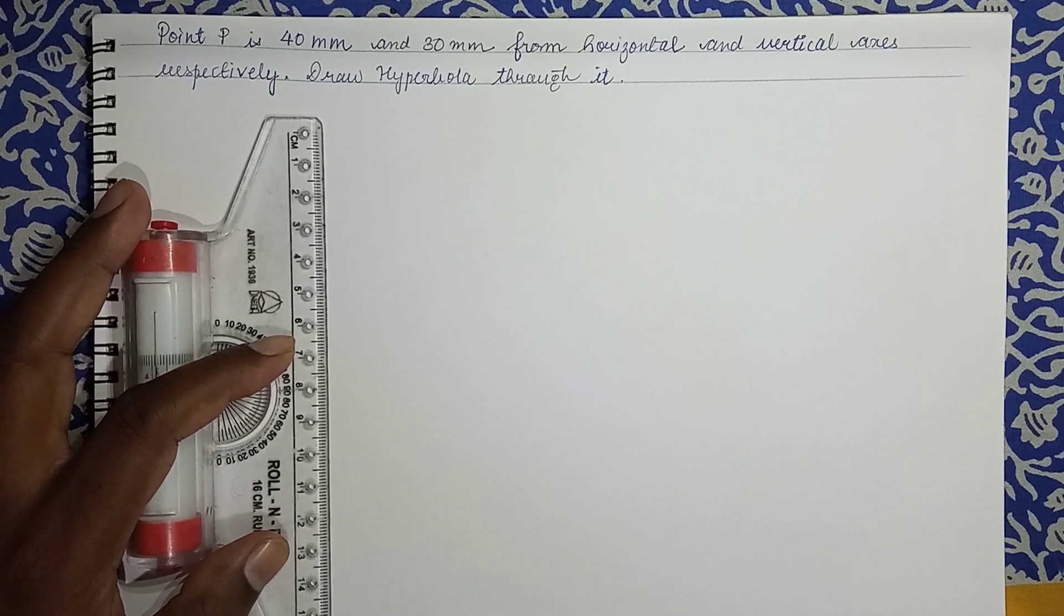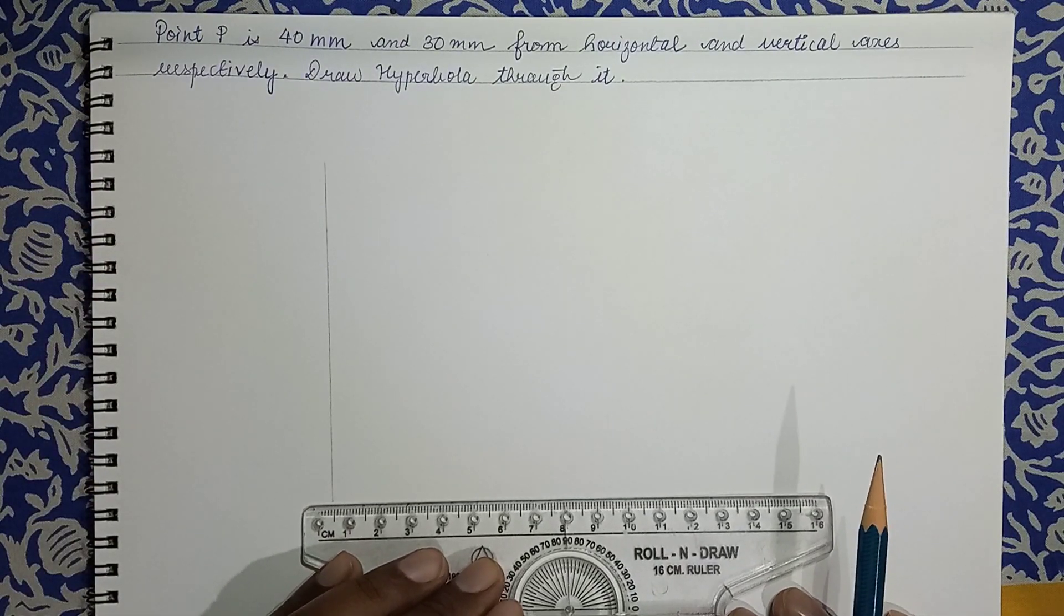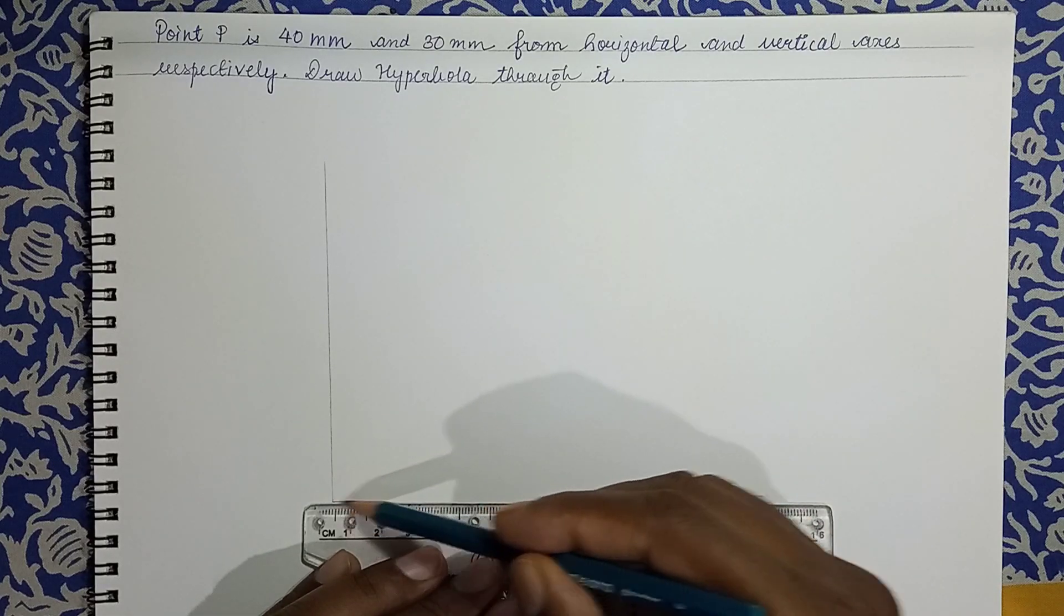We have the axes. With the help of roller scale, we can draw a line perpendicular to one another. And here point P is to be located at a distance of 40mm from horizontal axis.